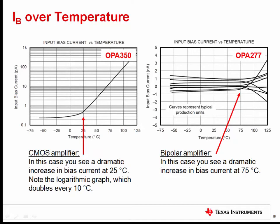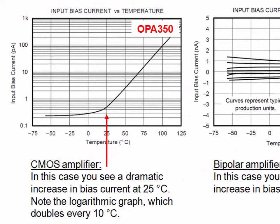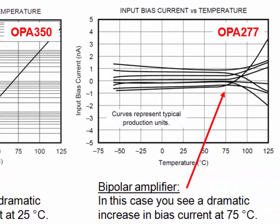One thing to remember with low bias current amplifiers is the effect of IB over temperature. In MOSFET amplifiers, the bias current can double every 10 degrees C. In the example on the left with the OPA350, the input bias current increases significantly at temperatures above 25 degrees C. If you only considered the room temperature value of IB and then operated the amplifier at elevated temperature, you would have significant errors. Note that the vertical axis of that plot uses a logarithmic scale. With a bipolar amplifier, the initial input bias current at room temperature is often large enough such that the relative change over temperature is minimized. The OPA277 shows that the input bias current starts to increase at temperatures above 75 degrees C, and the vertical axis there uses a linear scale.